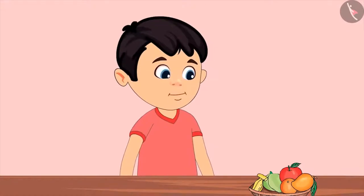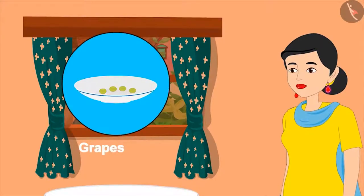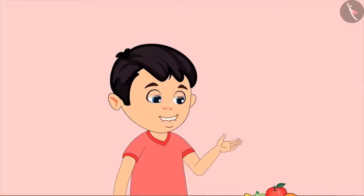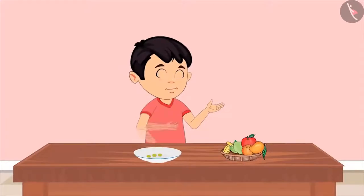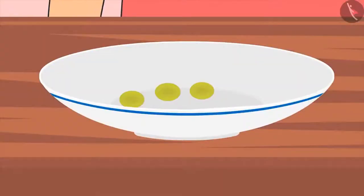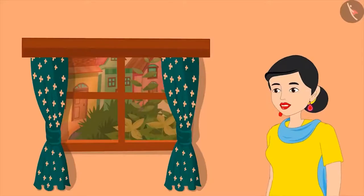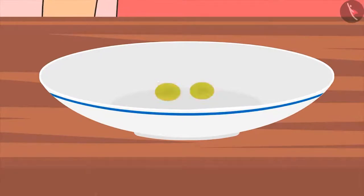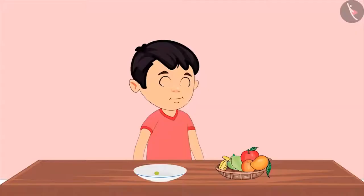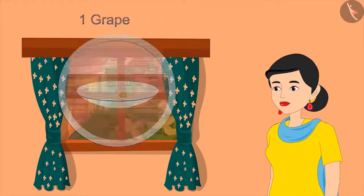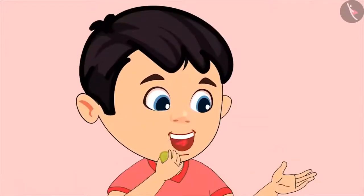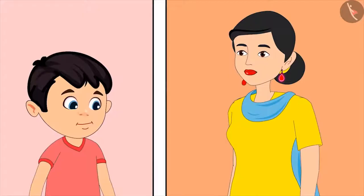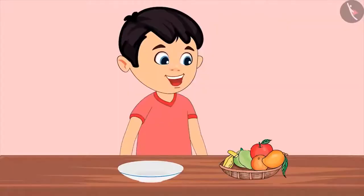Mom, please give me some grapes to eat. Pinky had eaten grapes and there are only four left. Have these, I will bring more later. I have eaten one out of four grapes. Now there are one, two and three — that means three grapes. Let me eat one out of the three grapes. Out of three, if you ate one grape, then one and two are left — that means two grapes. Well done Chotu. I ate one out of two grapes. So one grape is left. Now if I eat the last remaining grape also, then how many are left? Not a single one. That means zero. Now all the grapes are finished.